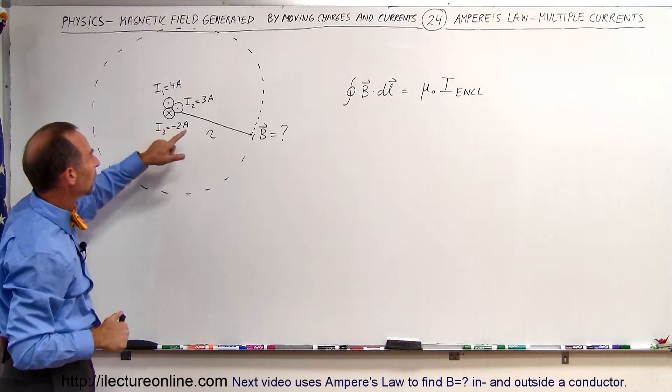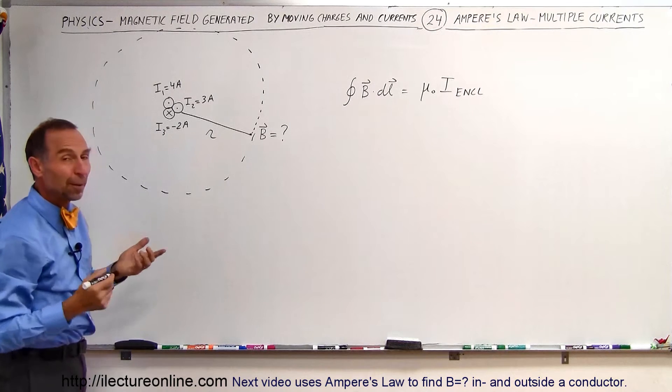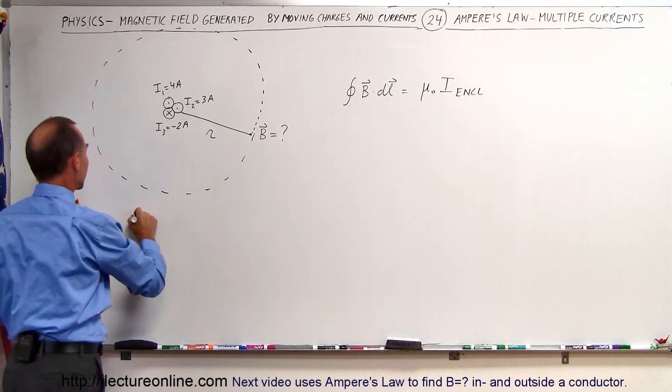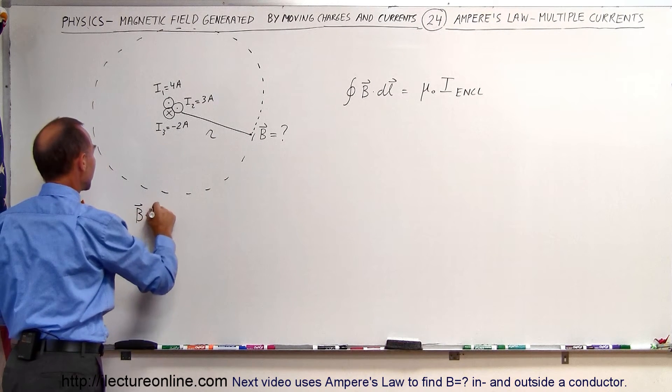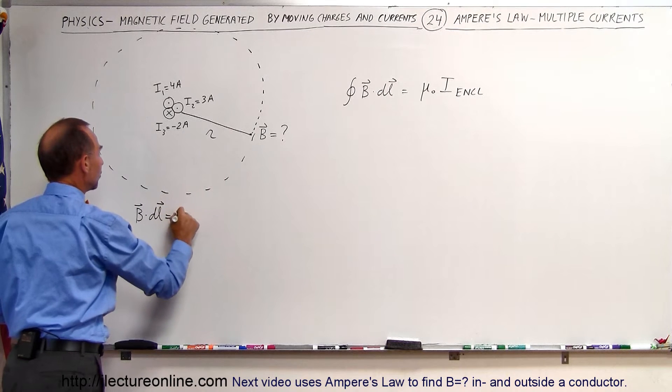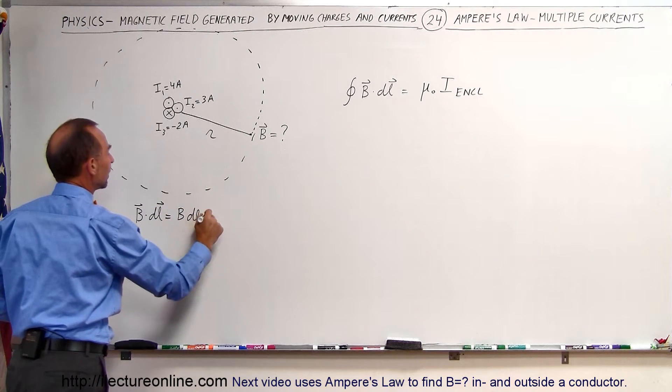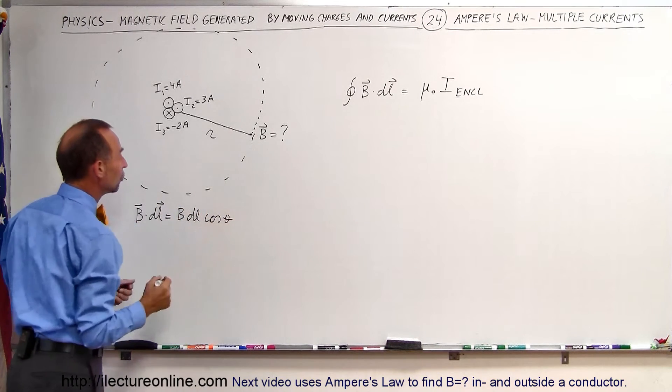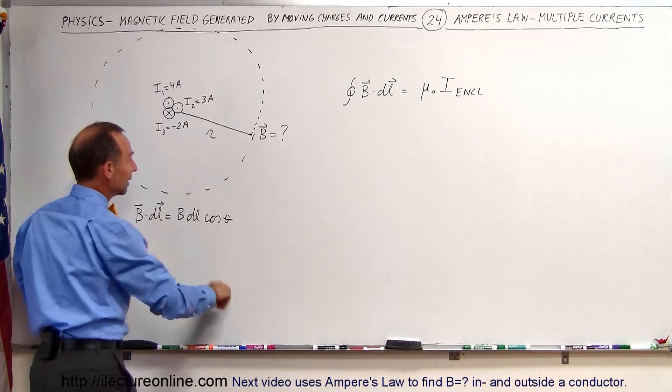Now, what we need to do is we need to multiply B dot DL, and remember the dot product B dot DL is equal to the magnitude of B times the magnitude of DL times the cosine of the angle between the two. But remember that in this case, since there's perfect symmetry...